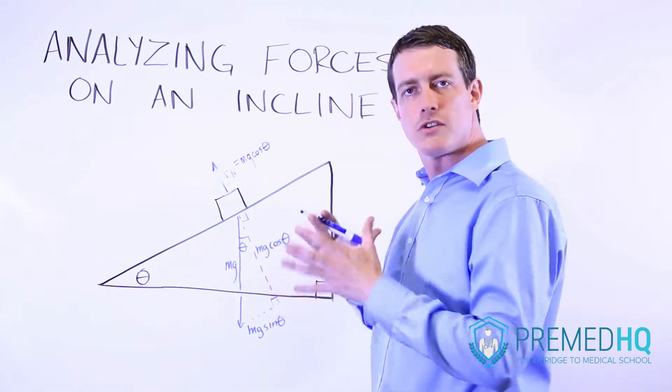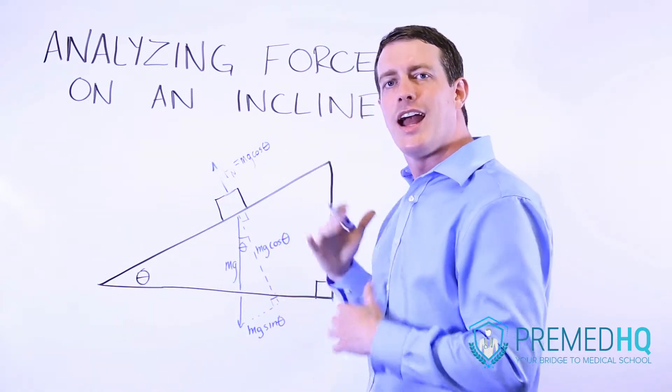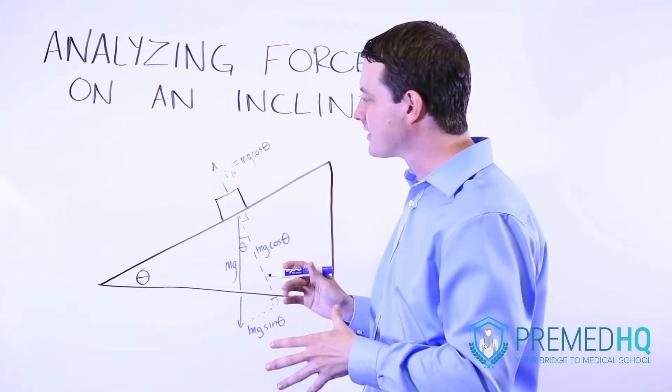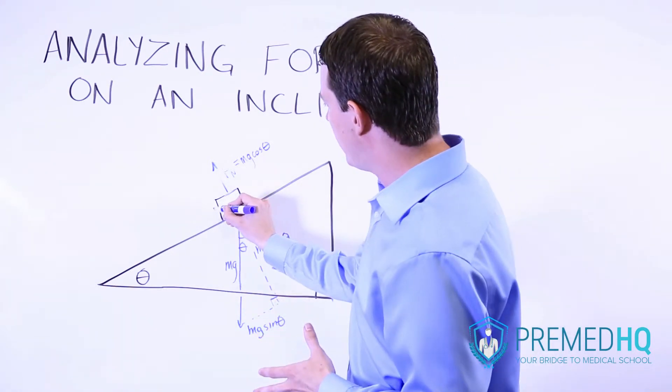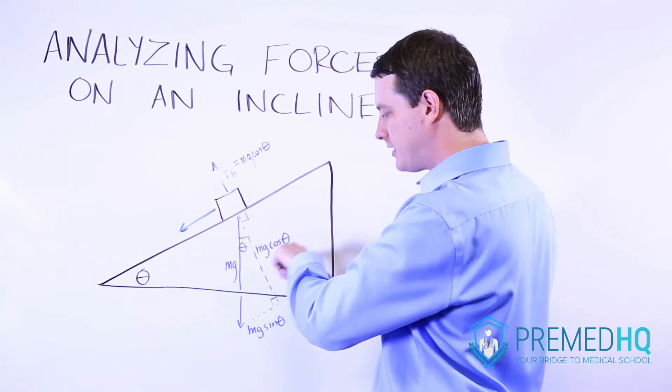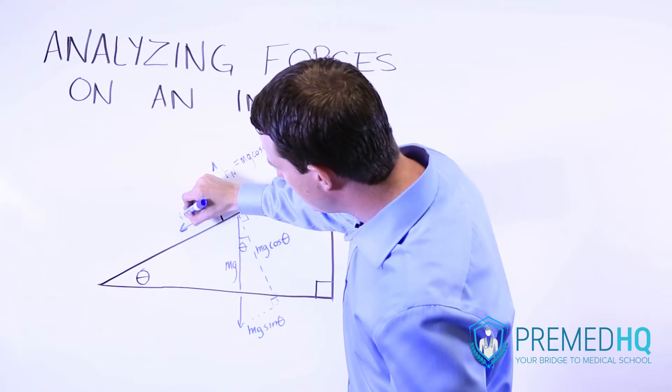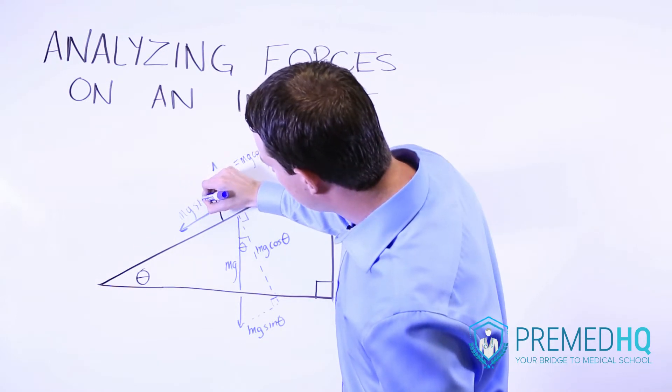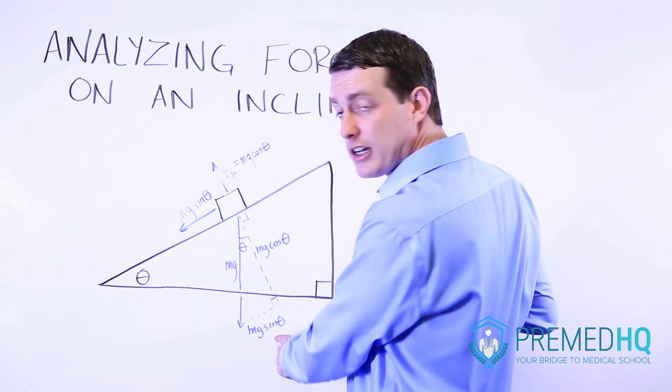That's the normal force that is exerted by gravity, and you can use that for friction calculations and things like that. And the amount that gravity is exerting a force that's pushing this object down the incline is simply equal to mg sine theta, which is identical to this part here.